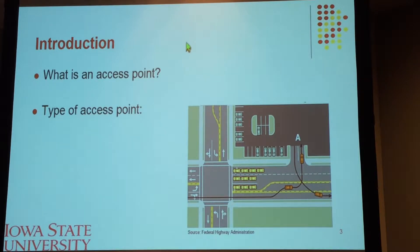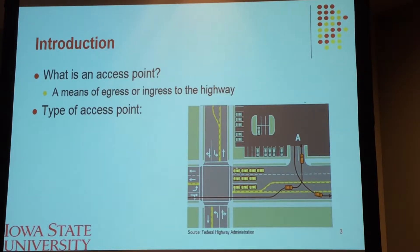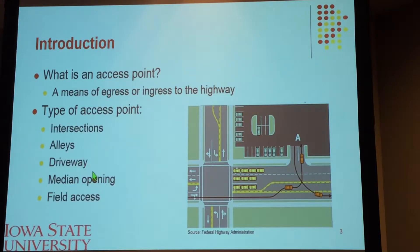What is an access point? Based on the Highway Capacity Manual, an access point can be defined as any intersection, driveway, or median opening that allows access on the right-hand side. If the access point is on the left-hand side, it is considered an access point if it affects traffic flow in the opposite direction. There are several types of access points that we encounter every day, for example: intersections, alleys, driveways, median openings, field access, and many more.